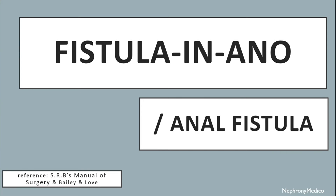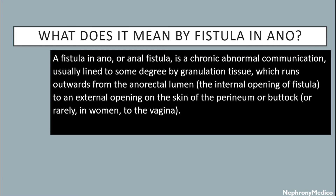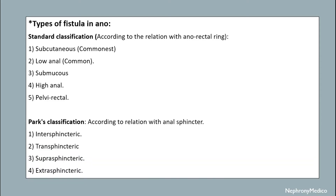Hello and welcome. Let's talk about fistula in ano, or anorectal fistula. A fistula in ano is a chronic abnormal communication lined to some degree by granulation tissue, which runs outwards from the anorectal lumen — the internal opening of the fistula — to an external opening on the skin of the perineum or buttock, or rarely into the vagina.